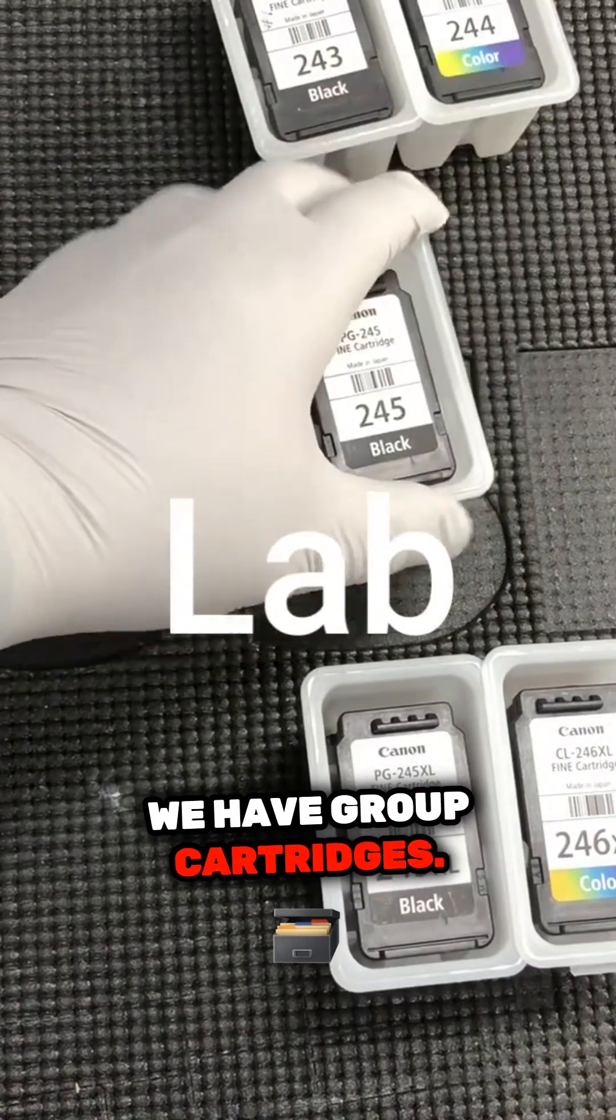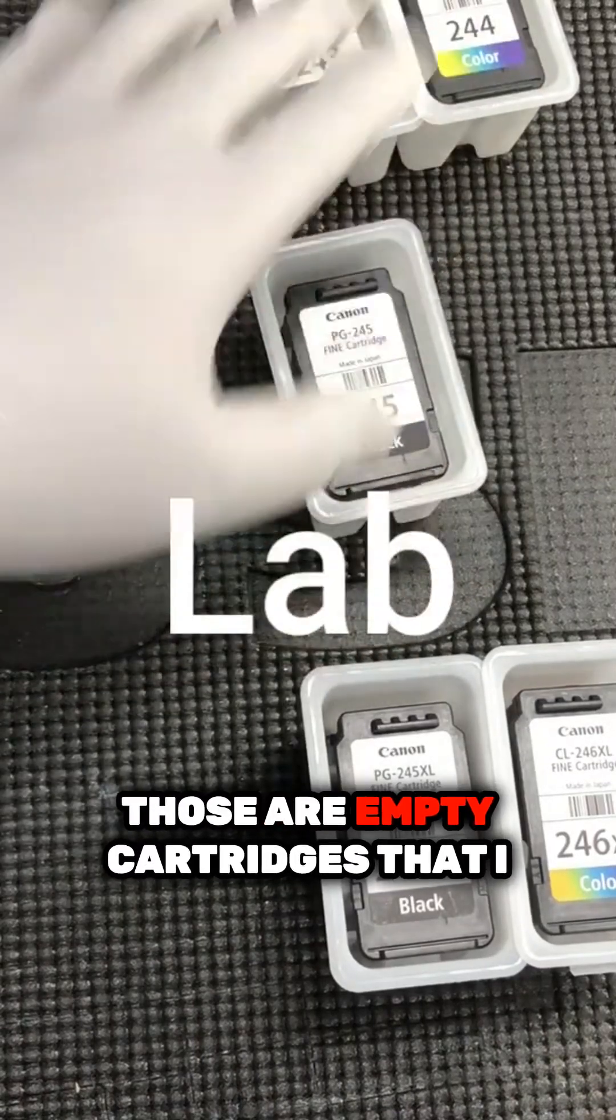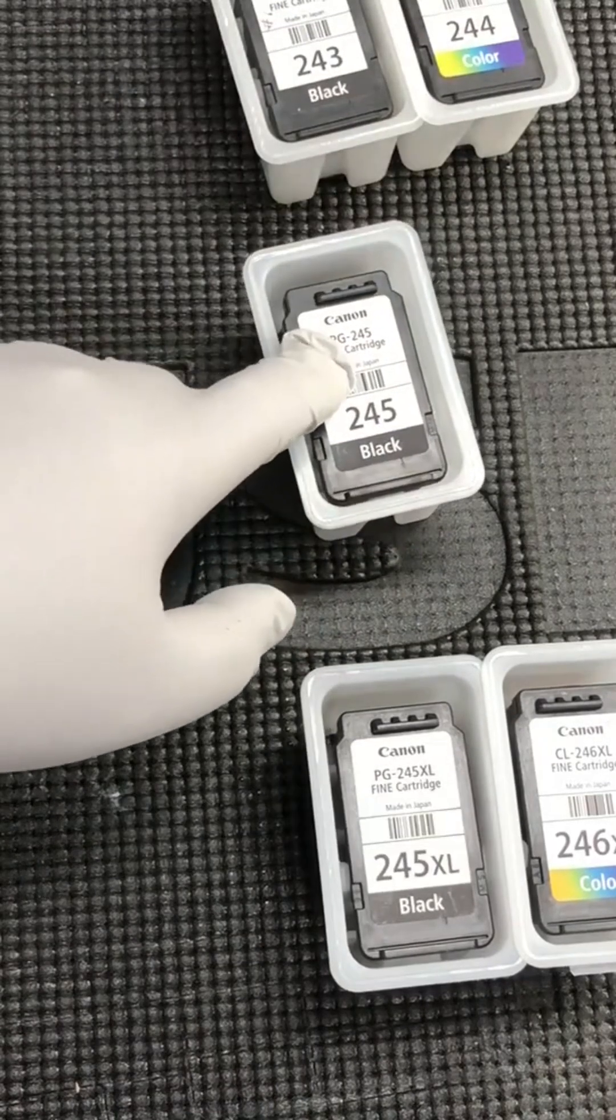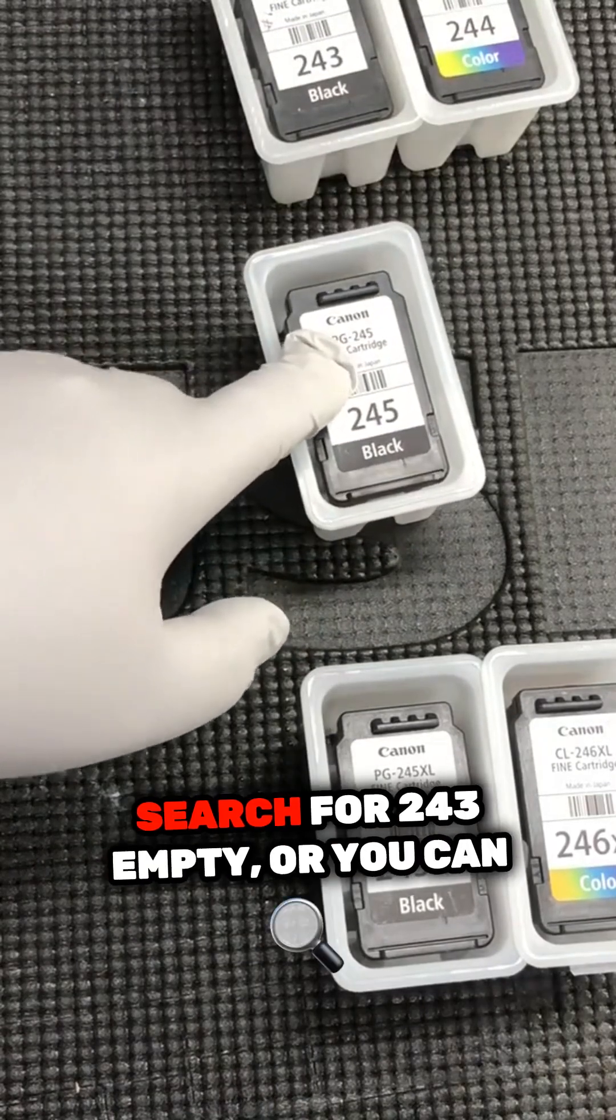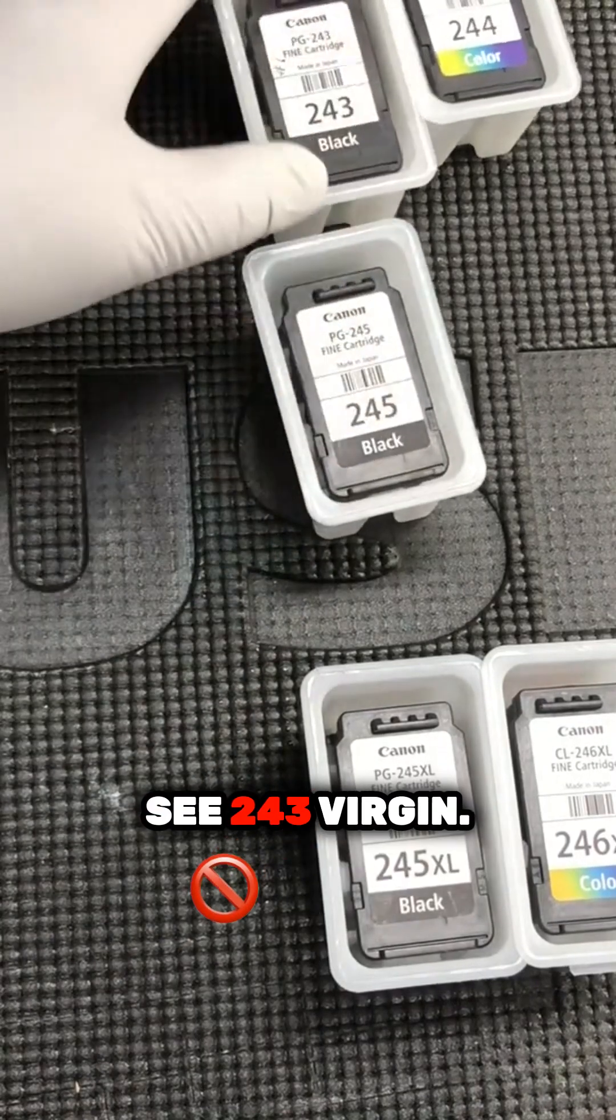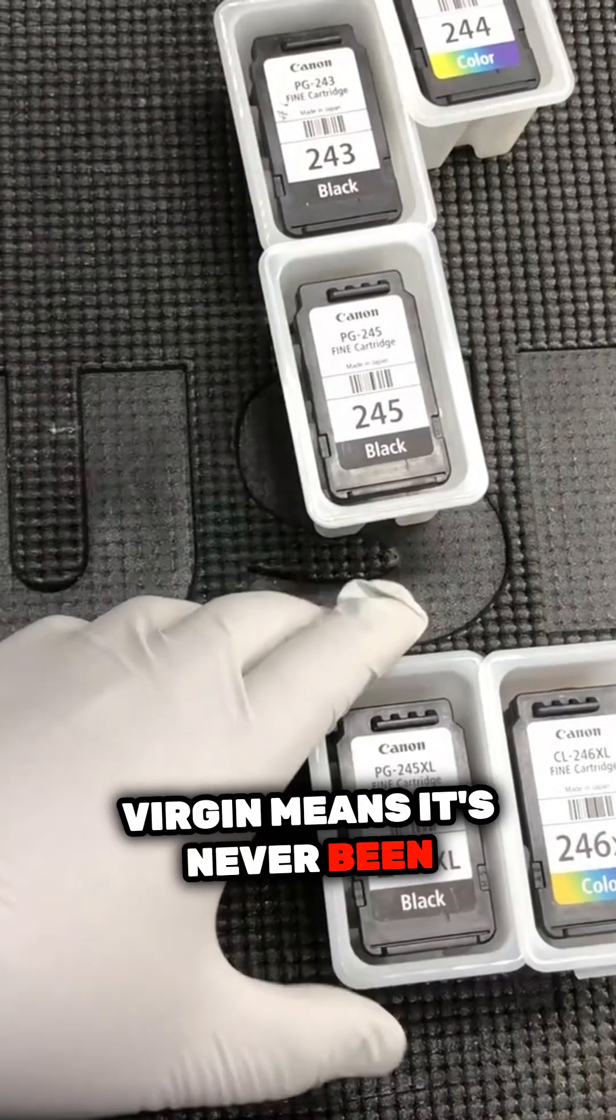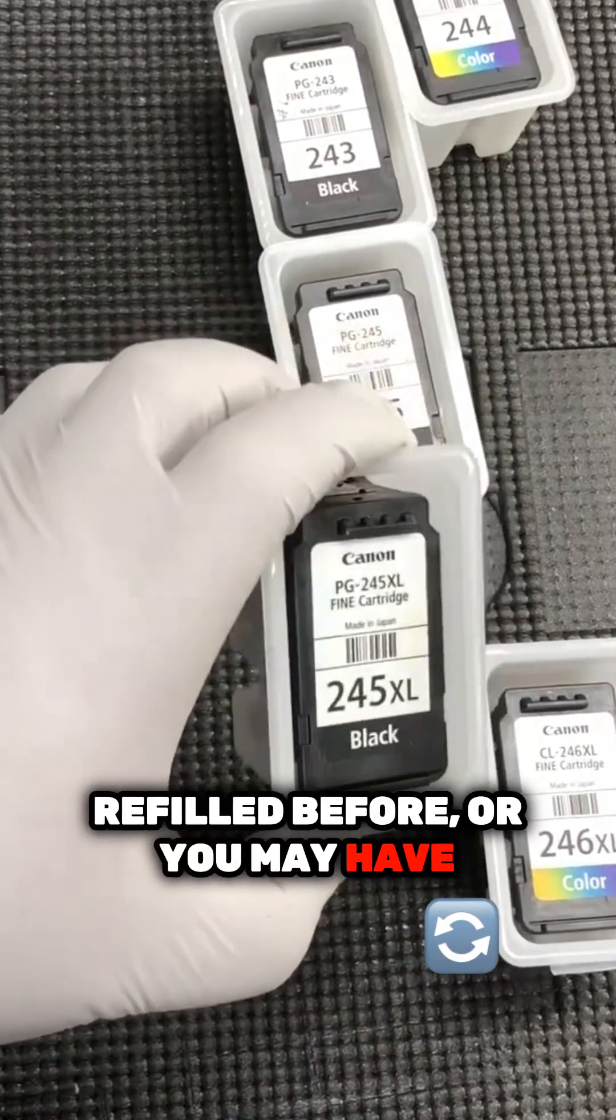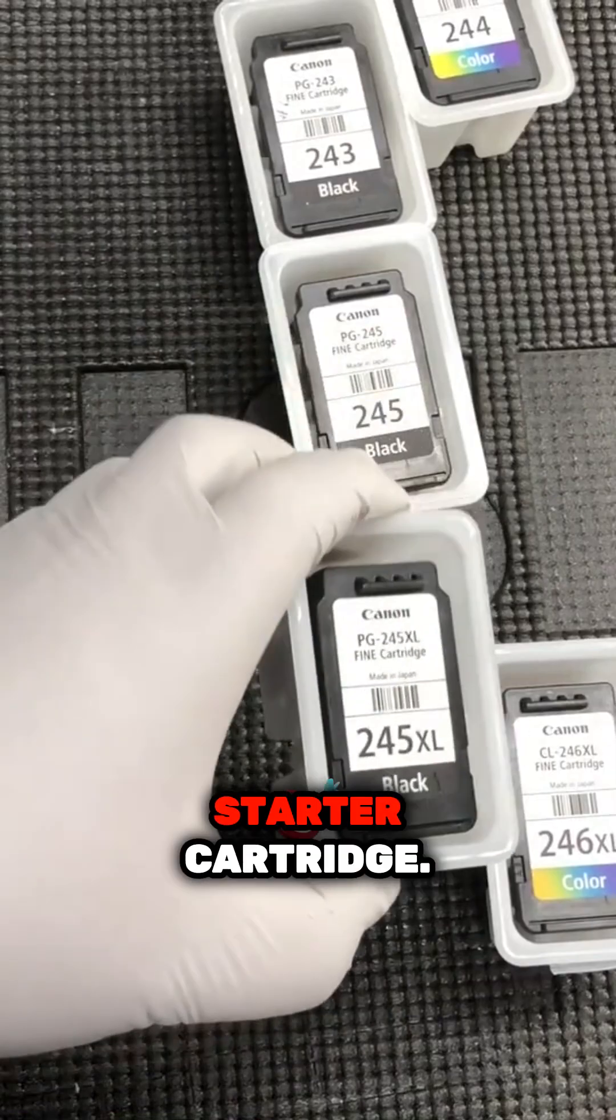We have these cartridges. Those are empty cartridges that I bought from eBay. When you go to eBay, you can search for 243 empty, or you can search 243 virgin. Virgin means it's never been refilled before. Or you may have cartridges left from your starter cartridge.